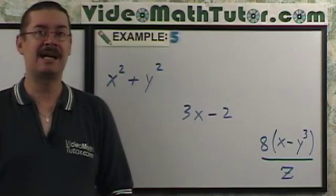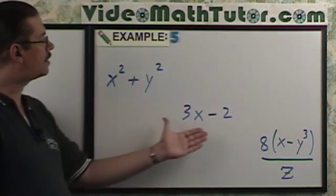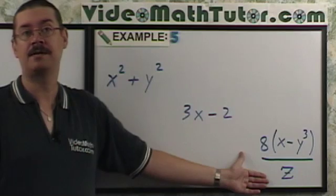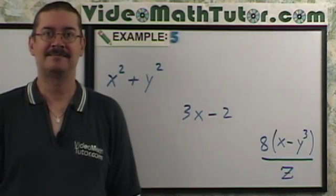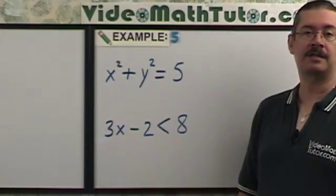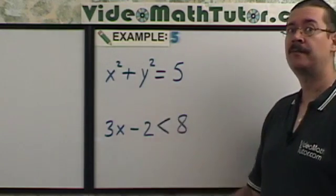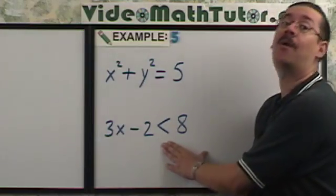Here's some examples of algebraic expressions. As you can see, they're combinations of constants and variables with different mathematical operations. Now, the following here are not algebraic expressions. Why? Well, the first one here has an equal sign, and the second one is an inequality.